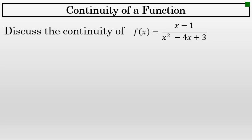A rational function, such as f(x) = (x - 1) / (x² - 4x + 3), is continuous everywhere except at the x values that make the denominator 0. So when asked to discuss the continuity of a function such as this, first set the denominator equal to 0. When setting the denominator equal to 0 and solving, you will find the x values where there are discontinuities.